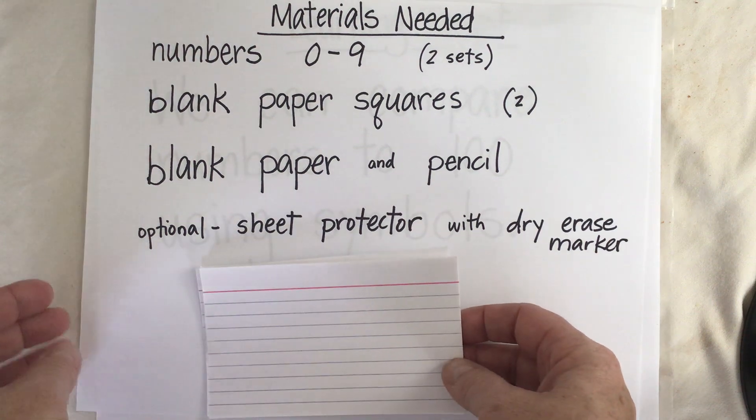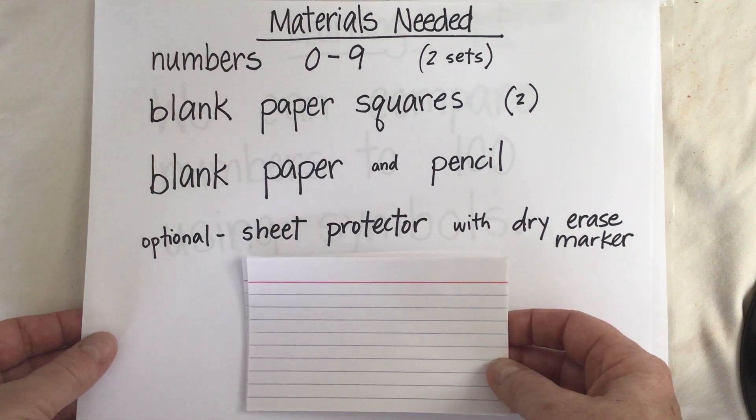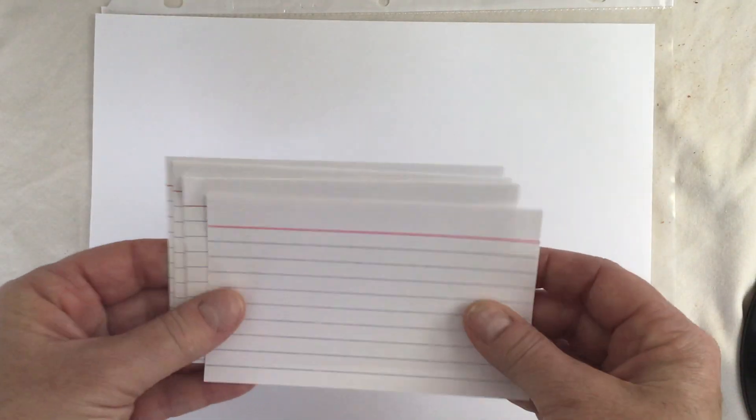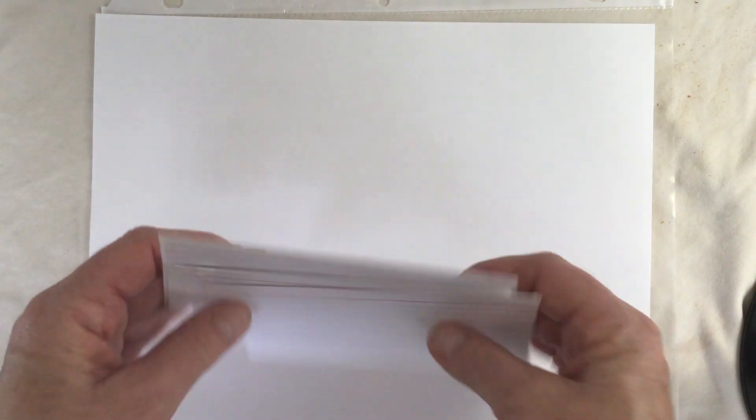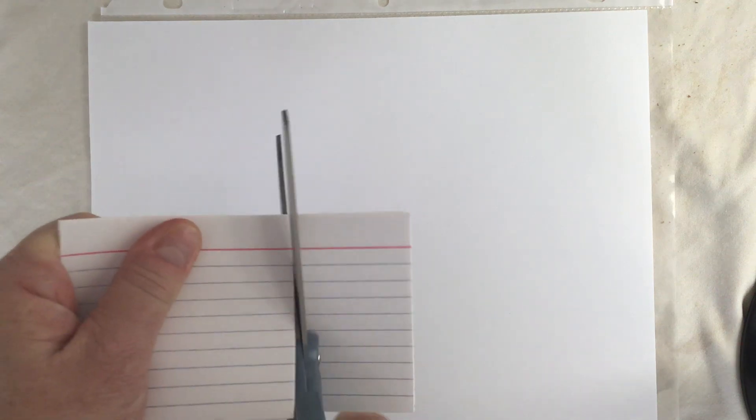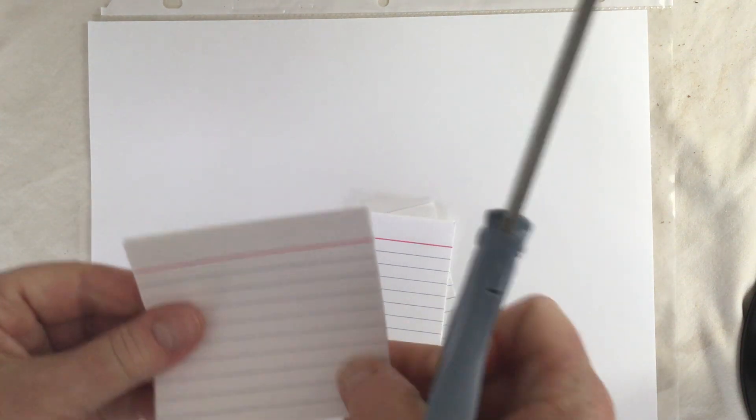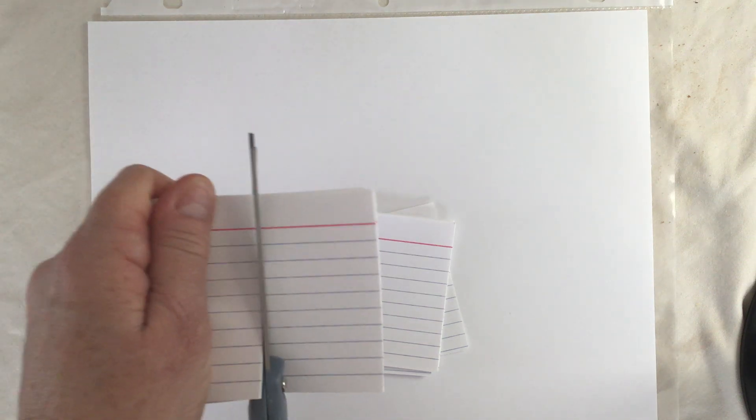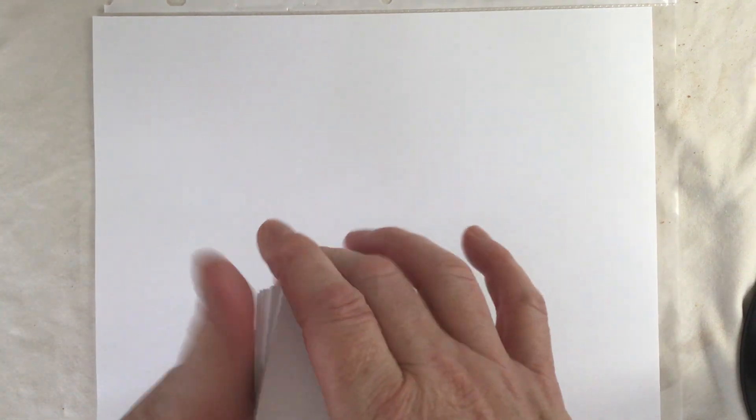The first thing we're gonna do is make our numbers 0 to 9. I don't have number sets here in my house so I'm going to make them. I found some index cards upstairs and I'm gonna cut these index cards into thirds. This means I'll take one whole and I will cut it into three pieces. Each piece is a third. Okay now I have a bunch of blank cards.